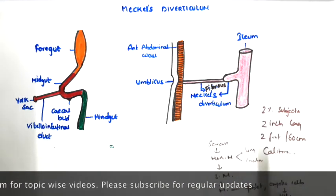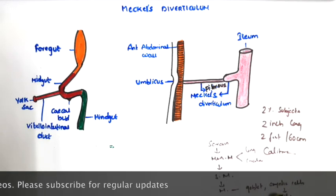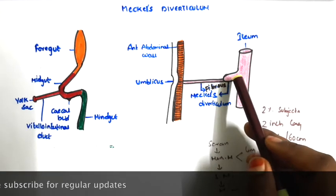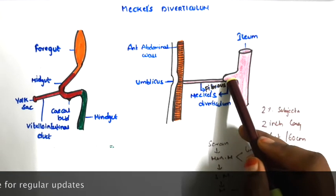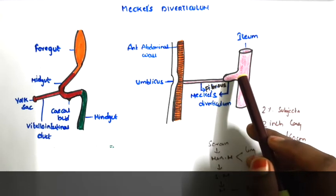Due to the presence of oxyntic cells in the mucosa layer, peptic ulcers can lead to perforation. Inflammation of Meckel's Diverticulum leads to pain that resembles appendicitis.